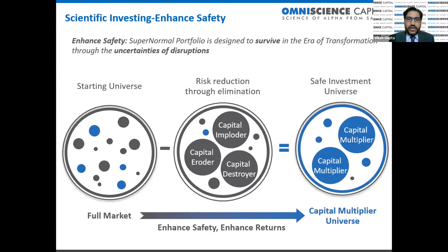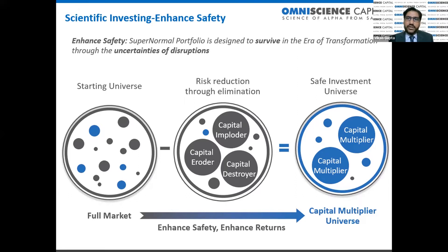The first step is enhanced safety. Starting from the full universe, here's how we do stock selection. The first step is to reduce risks on a fundamental level — not about volatility or beta, but about how companies operate. Weak balance sheets and loss-making companies — we call them capital destroyers — are eliminated. Companies which cannot earn their cost of capital are capital eroders; the longer you stay with them, the more you're losing money as the net worth of the company is slowly destroyed.